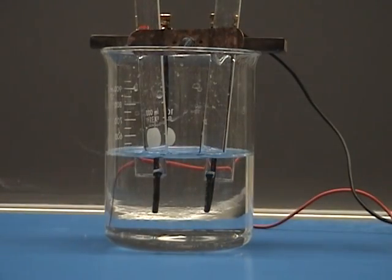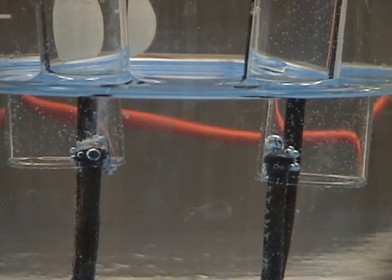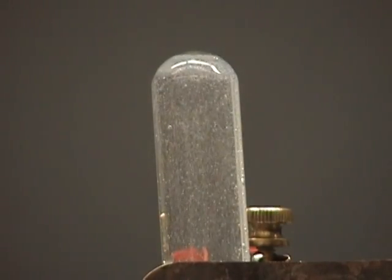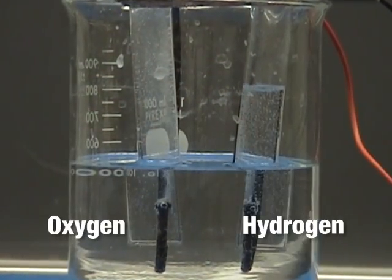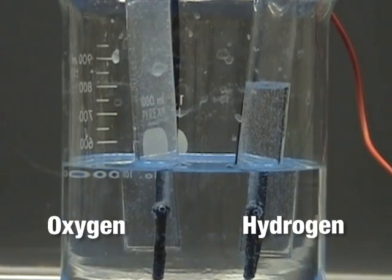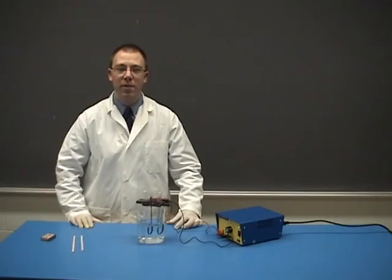Pay attention to which electrode is negative and which is positive. Observe the results. Note that one of the test tubes is filled with twice as much gas. The ratio of gas in the two test tubes is 2 to 1. Turn off your power supply.